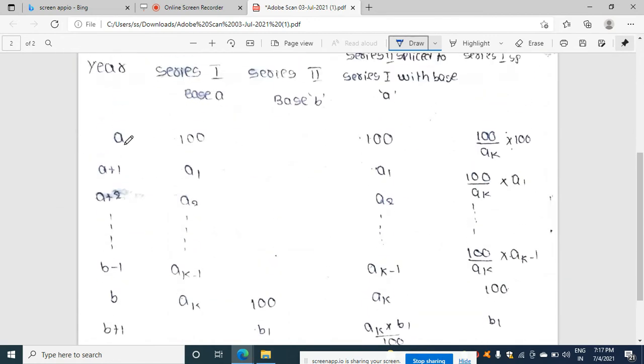Here students, it is written, suppose there is here A, A plus one, A plus two, and so on. Then the series got discontinued, then it started from B, B plus one, and so on.